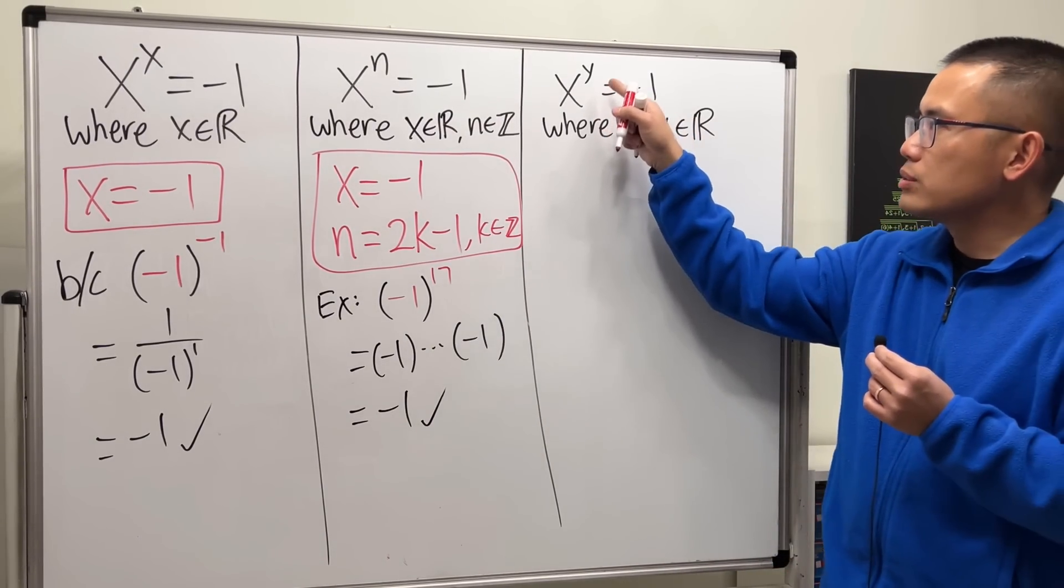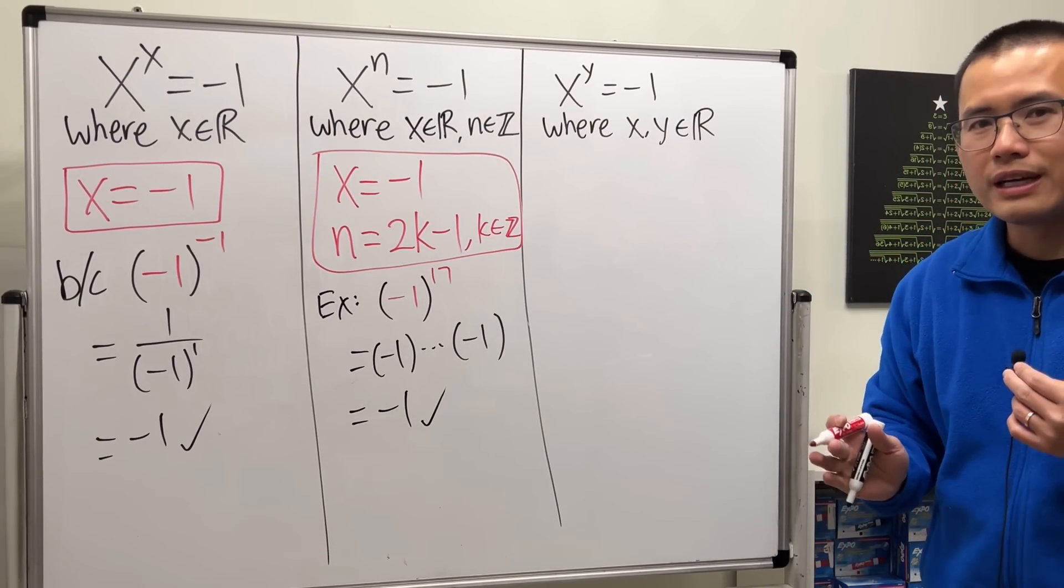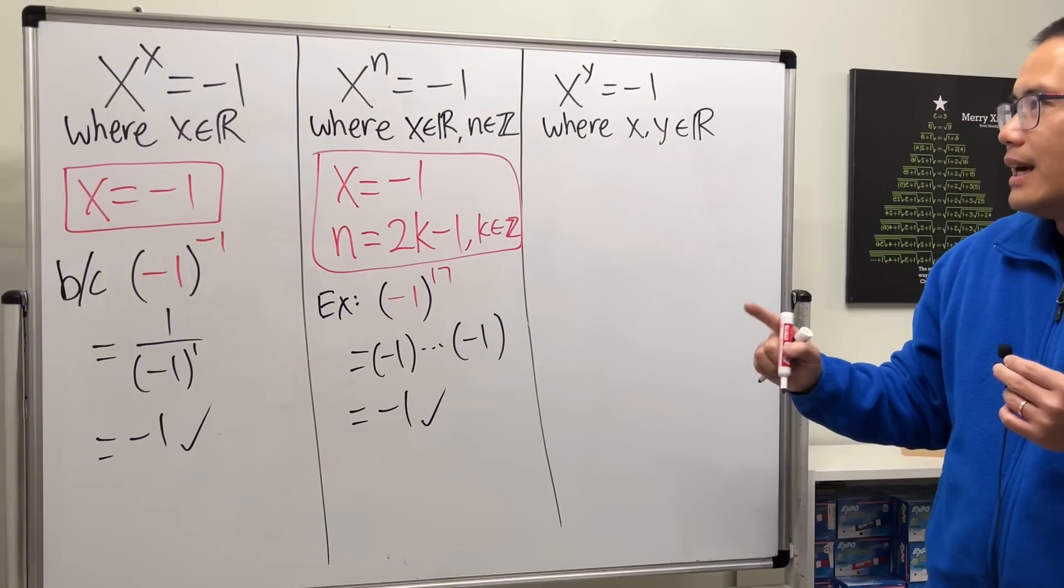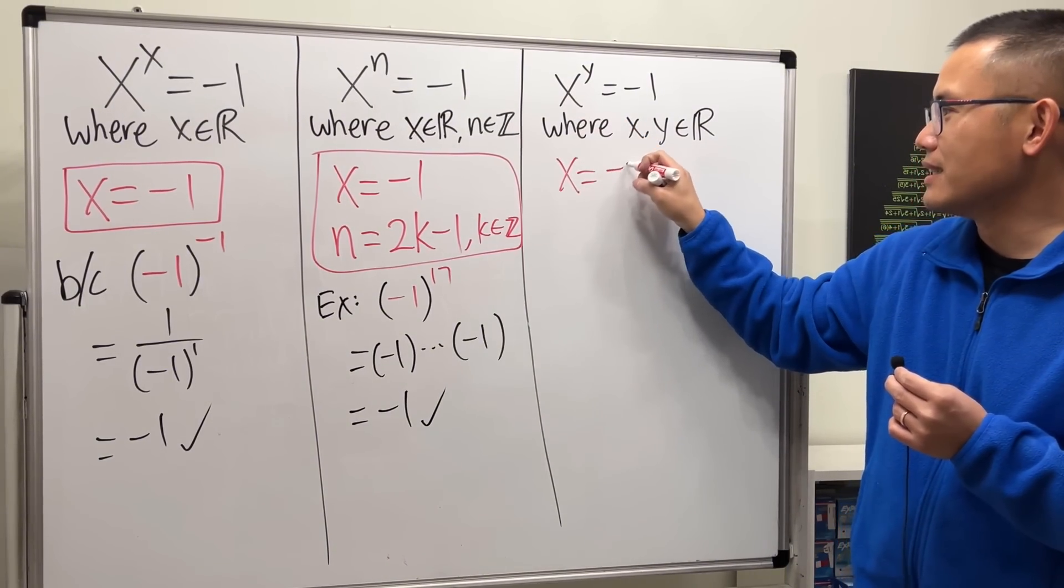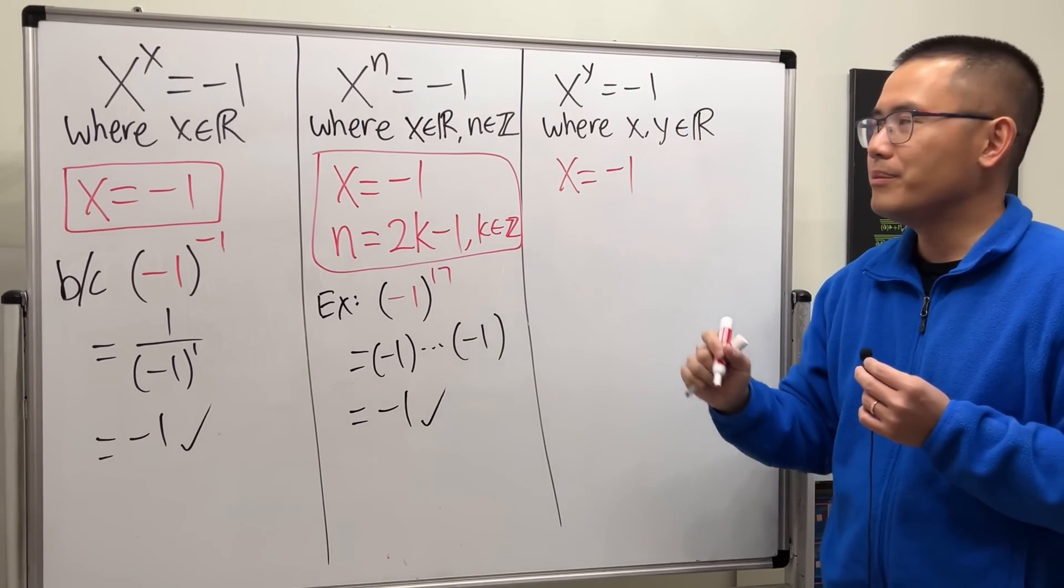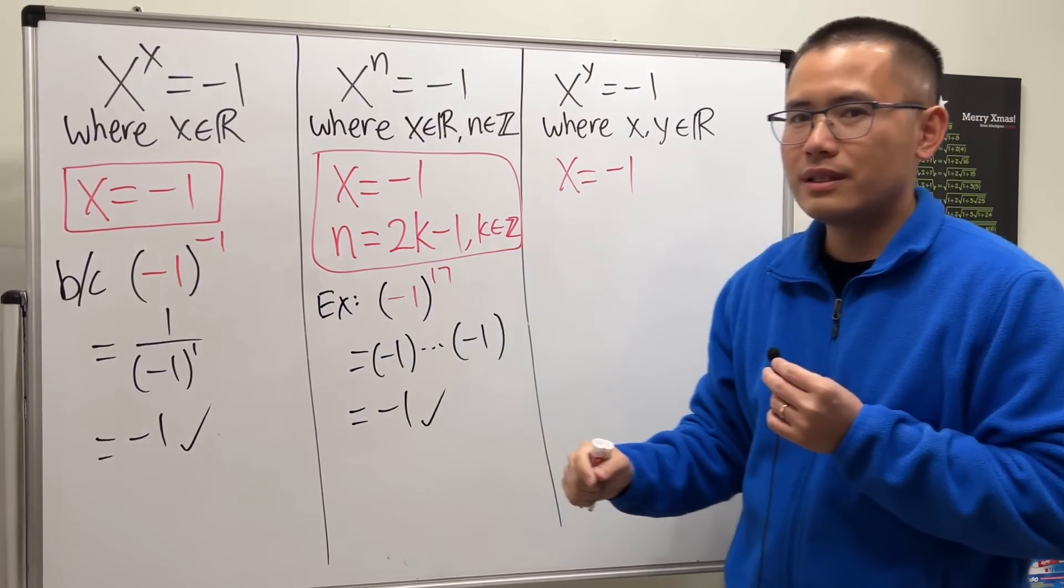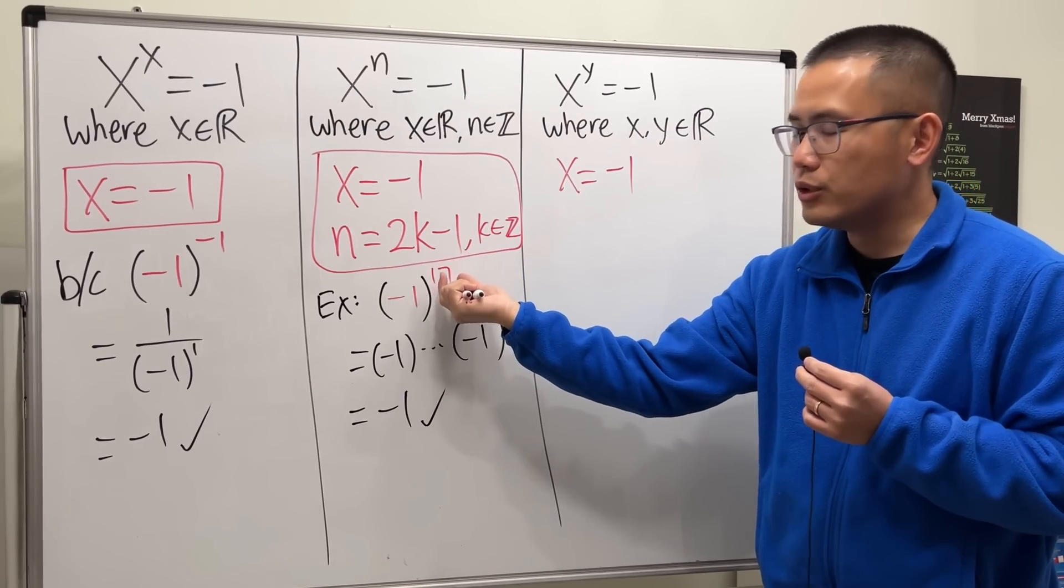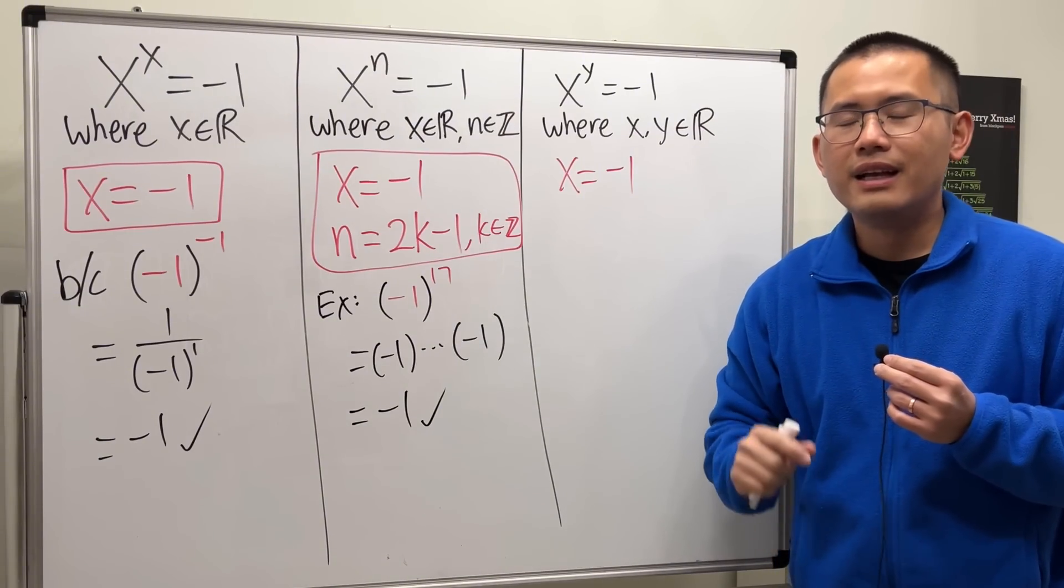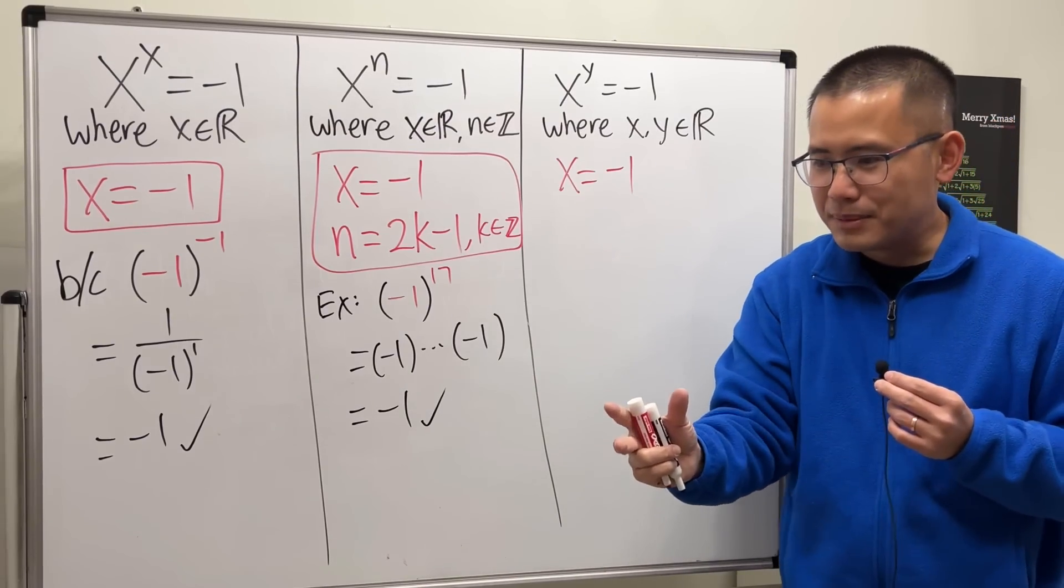Now for the last one, x to the y equals negative 1. x and y are real numbers. I know you might want to ask me for the complex numbers, but maybe in the future. Anyways. So for this one, I will tell you the base has to be negative 1. That's the only hope. But now, it's trickier for the y, though, because y is a real number. We have seen that, of course, negative 1 works. In fact, all the odd integers work, but can we have more possibilities? Yes.